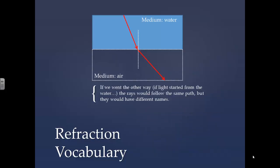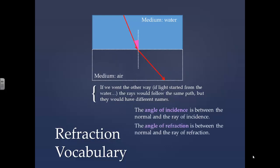If we went the other way, if the light started from the water, the rays would follow the same path, but they would have different names. The angle of incidence would be between the normal and the ray of incidence. The angle of refraction would be between the normal and the ray of refraction. Notice that now the angle of refraction is larger than the angle of incidence.